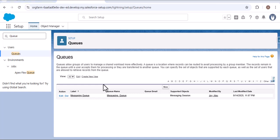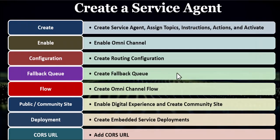The next step is to create the omni-channel flow. Let's understand why we need it. Omni-channel is used to route requests to human agents, but to route requests from the customer to AI agents and automate that process, we need to create the omni-channel flow. Whenever the customer raises a request, it will get routed to the AI agent.